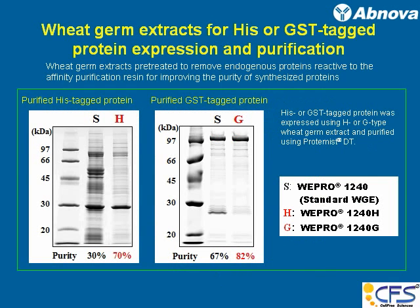The H, G, and D grades of wheat germ extract work like this. With standard wheat germ extract, you see lots of background due to endogenous proteins, and some proteins may compete with the adsorption site during affinity purification. But if you remove them beforehand, you have a very clean background. For His-tag protein, you can improve purity up to 70%, and for GST tag, up to 82%. This is the difference between H, G, and the standard grades.